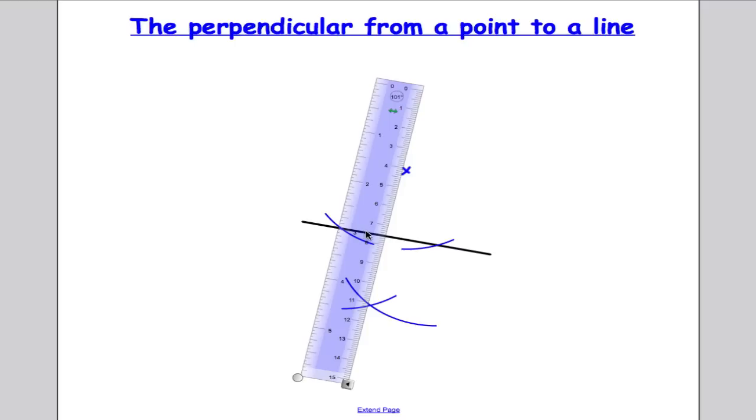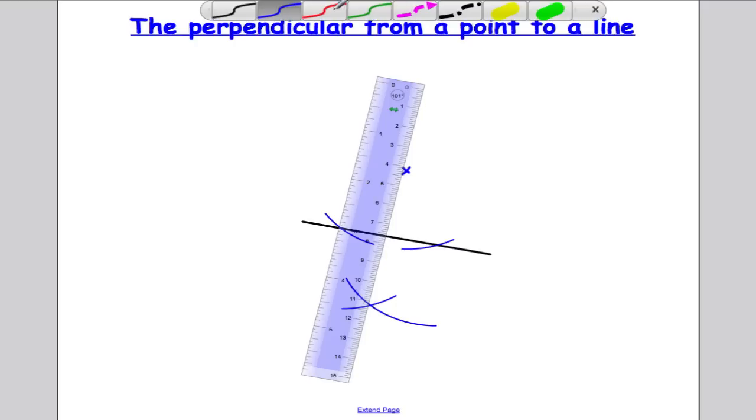So my ruler now goes through the point and it goes up to where the arcs crossed. Last part is draw in your perpendicular. Now the important thing here is that we do not want the perpendicular to go through the line. So it's just going to go down to the line as far as the line and stop there.